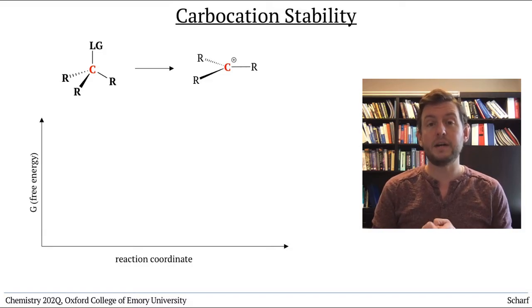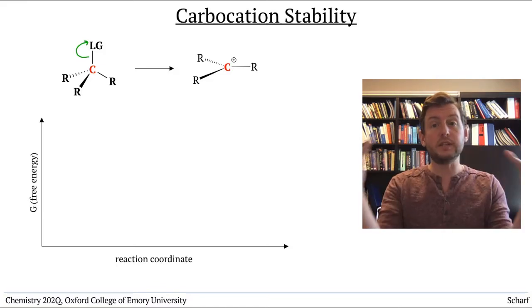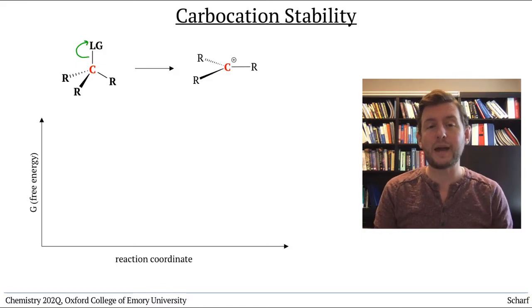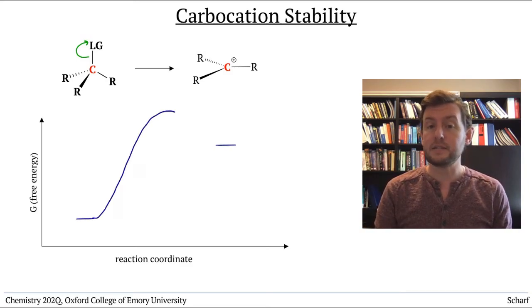The rate determining step of the SN1 reaction is the leaving group just leaving to produce a carbocation. This step is always uphill. It has a small Keq and a positive delta G°.